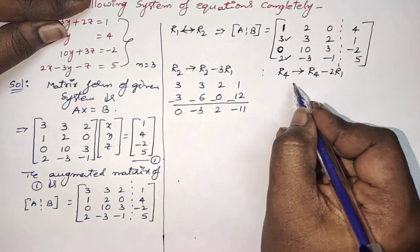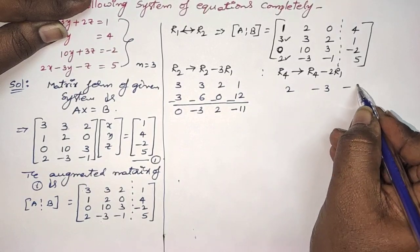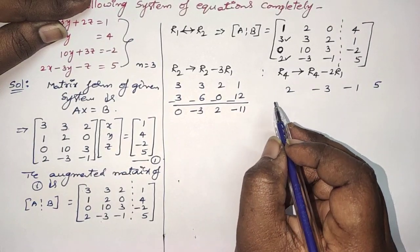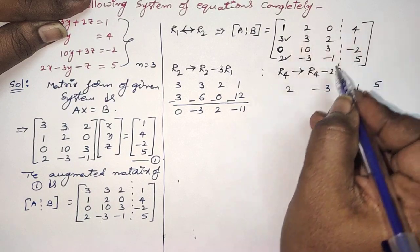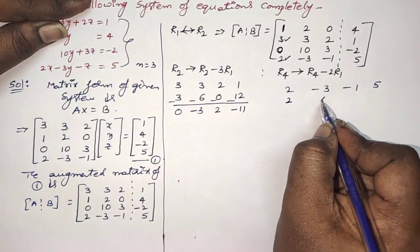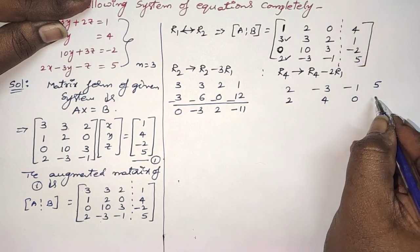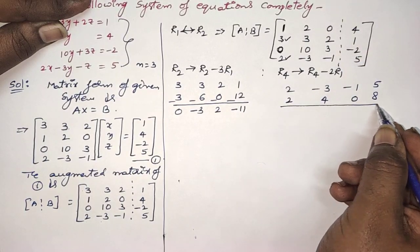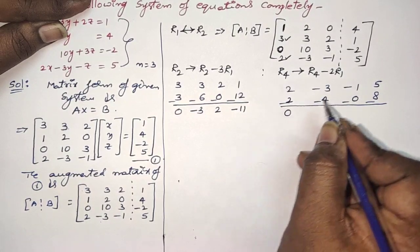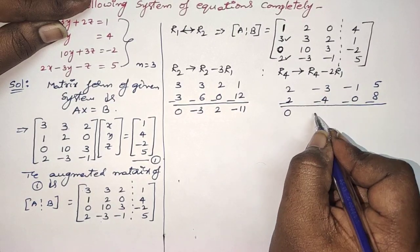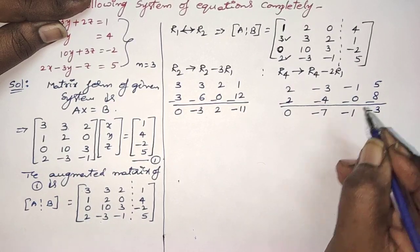And for R4: it is 2, minus 3, minus 1, 5. Multiply the first row by 2: 2×1=2, 2×2=4, 2×0=0, 2×4=8. Subtracting: 2−2=0, −3−4=−7, −1−0=−1, 5−8=−3.